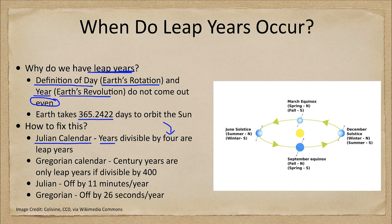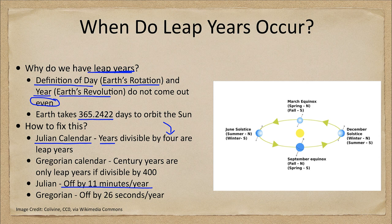The Julian calendar is off by 11 minutes per year. You may look at that and say it doesn't make much difference — it's certainly a lot less than a quarter of a day. However, over time this built up, and from the time of the Romans until the 1500s it ended up being almost two weeks off in terms of the distance between the seasons and the actual calendar.